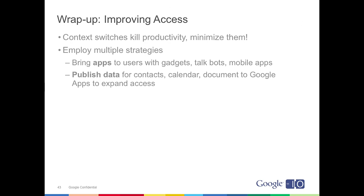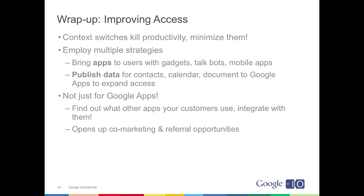Wrapping up the access area: keep in mind that context switching is a big productivity killer. A couple of different strategies — one is to bring applications to users where they need them, whether through contextual gadgets for Gmail or any of the sidebar gadgets in Gmail, Calendar, or Sites. The other way is to publish data and make it available so that people in other Google Apps or third-party apps can also access that data in a simple way. And remember, this is not just for Google Apps — find out what your customers use and integrate. They will appreciate it. You will find a return on that investment.